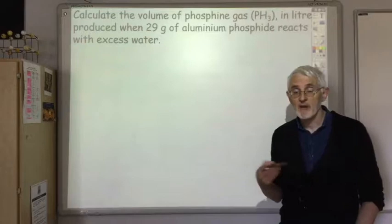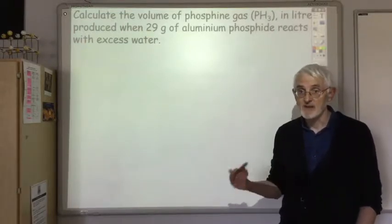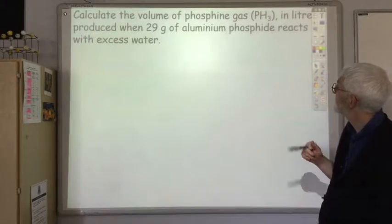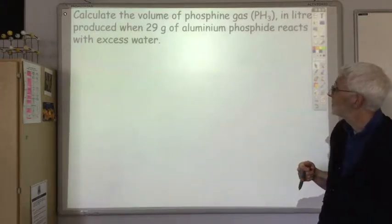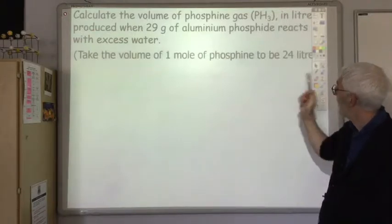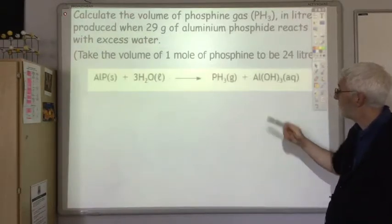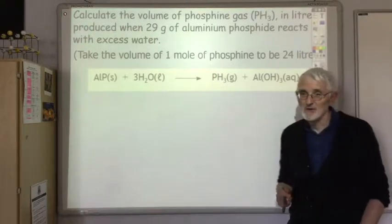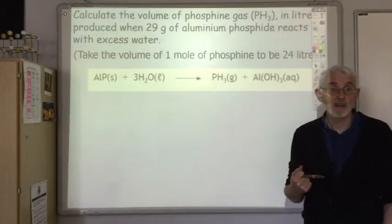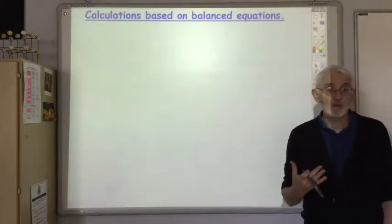The point of knowing how to calculate the number of moles of a gas is so we can use it in calculations based on balanced equations. For example: calculate the volume of phosphine gas (PH₃) in litres produced when 29 grams of aluminium phosphide reacts with excess water. The molar volume of phosphine is 24 litres, and the balanced equation is provided.